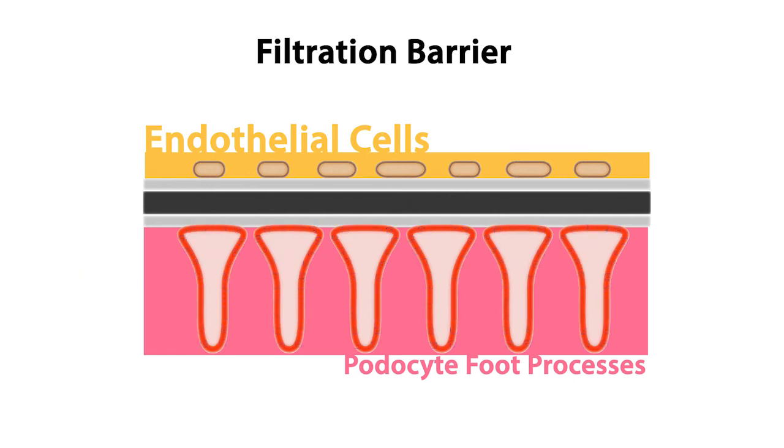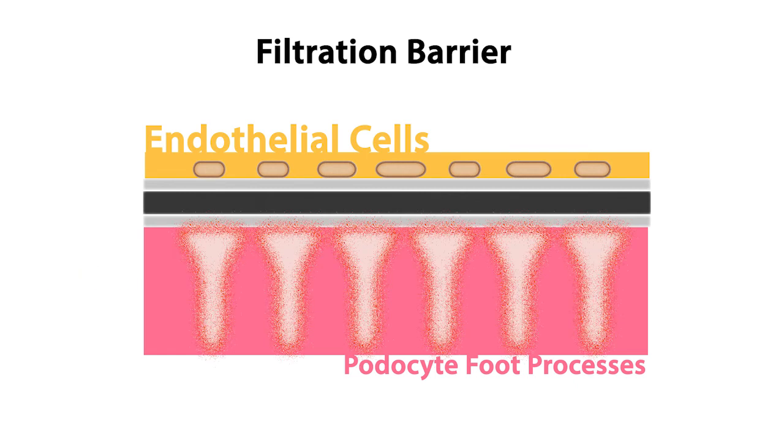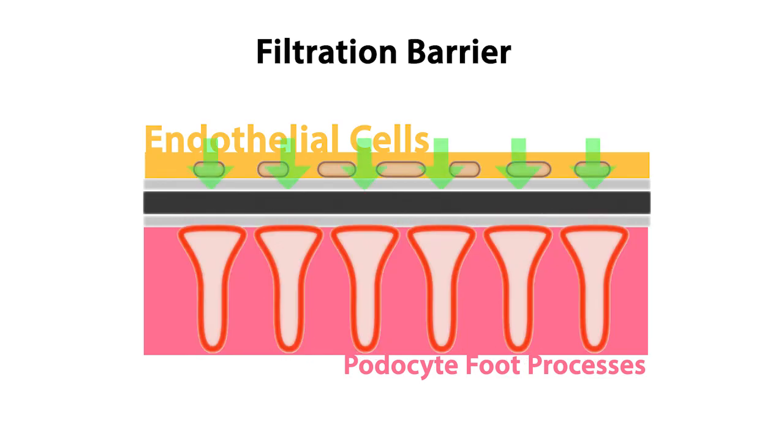Loss of these proteins often leads to the appearance of protein in the urine, otherwise known as proteinuria. Together, the endothelial cells and podocyte foot processes secrete extracellular matrix proteins that form the glomerular basement membrane, or GBM.